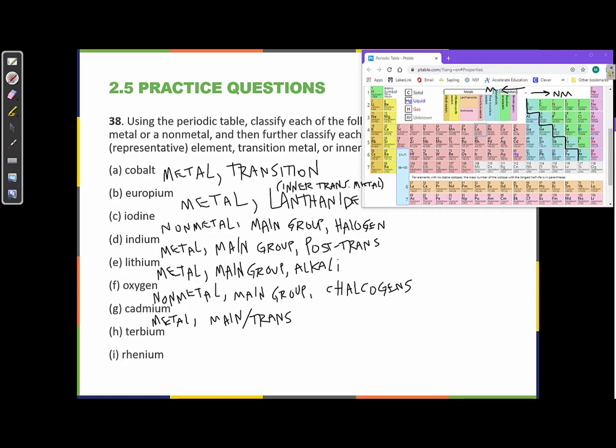Alright, let's find terbium. Terbium is... There it is. Terbium, number 65. So, this is also a lanthanide. It's in the lanthanide row. So, these are metals. And it's a lanthanide. And remember lanthanides and actinides are considered inner transition metals. So, this one is also inner transition.